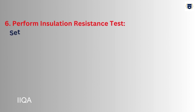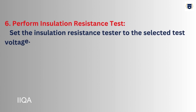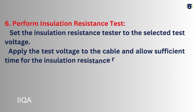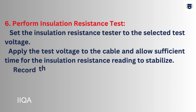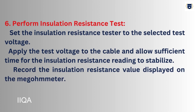Step 6 - Perform Insulation Resistance Test: Set the insulation resistance tester to the selected test voltage. Apply the test voltage to the cable and allow sufficient time for the insulation resistance reading to stabilize. Record the insulation resistance value displayed on the megometer.